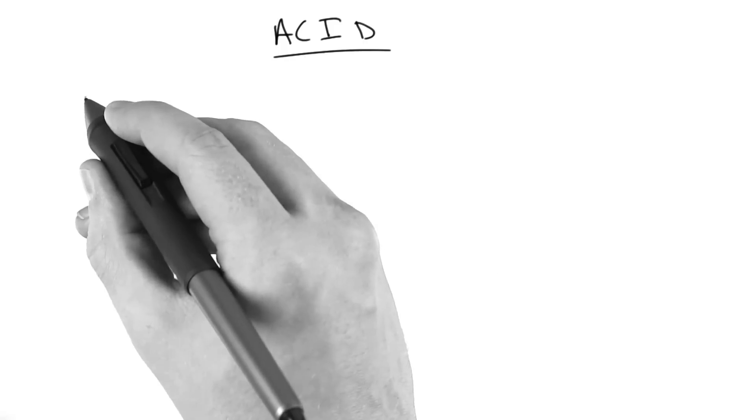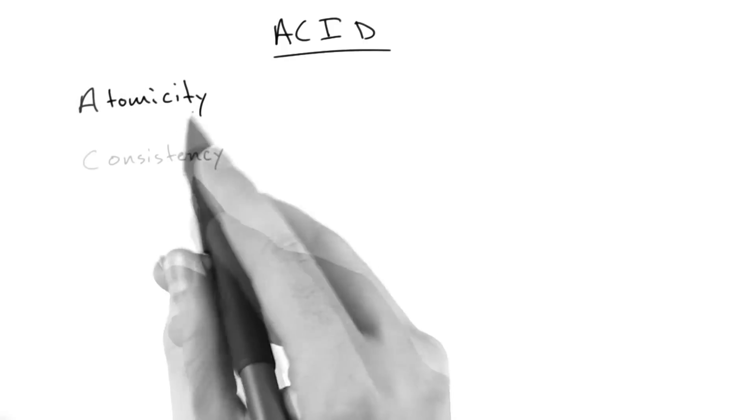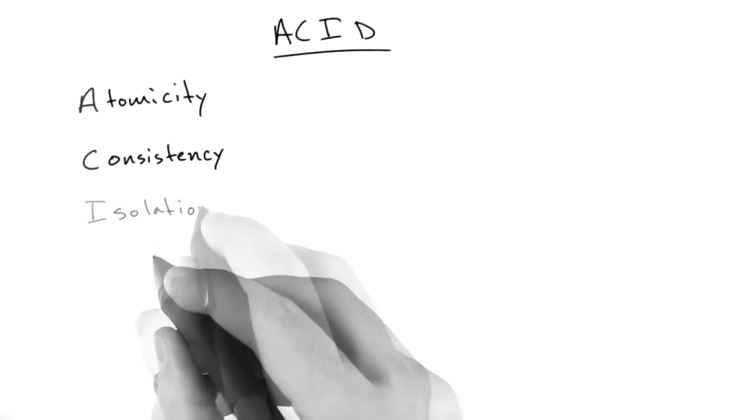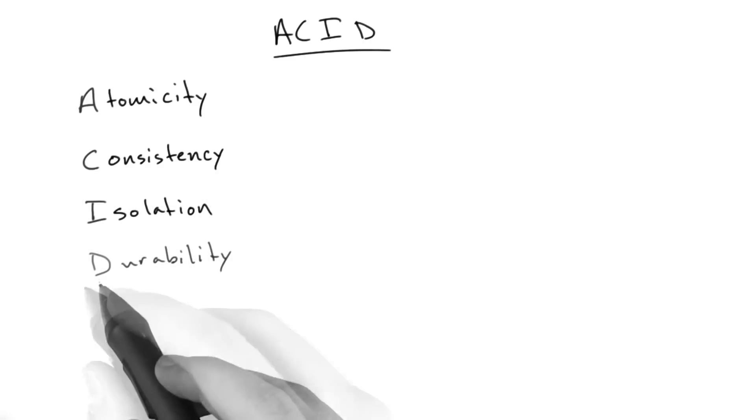So ACID, this stands for A for atomicity, C for consistency, I for isolation, and D for durability.